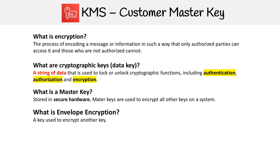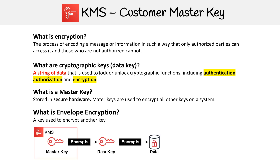Why would we want to use a key to encrypt another key? This is called envelope encryption. Here's a diagram of envelope encryption. The question is: how do you know that the data keys you use to unlock the data in your database are secure? That's where master keys come into play — the idea is that they create security around those keys.